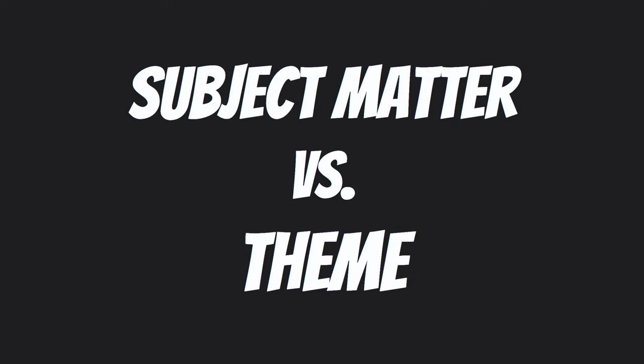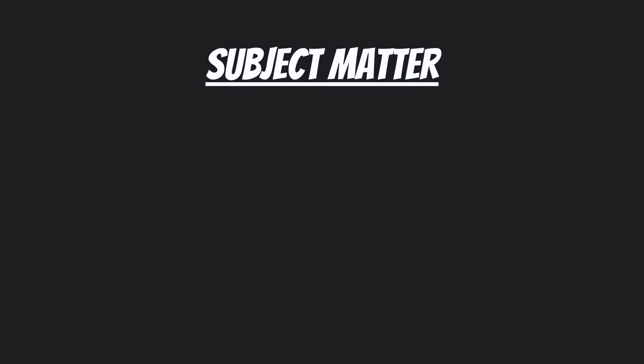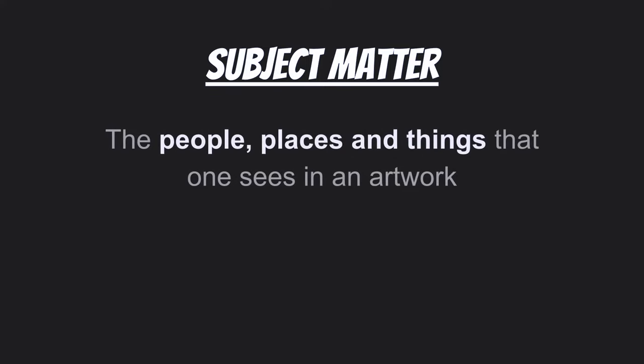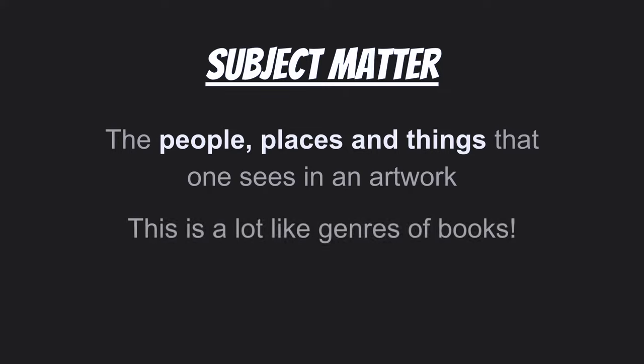Now we're going to talk a little bit about the content of our art — subject matter and theme. On just a glance, you might think they're kind of the same thing, but they're slightly different. When we talk about subject matter, think about what's the subject in a book — it's the same thing for art. Subject matter would be the people, places, and things that one sees in an artwork. It's like genres of books.